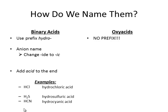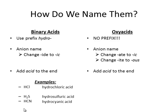Oxy acids do not use the prefix 'hydro.' Even though there's still hydrogen in it, the word 'acid' at the end tells us there's hydrogen in it. The prefix 'hydro' just tells us if it's binary or not. Since oxy acids are not binary, we don't use that prefix. We take the anion name, and instead of changing -ide to -ic, we need a new rule for -ate and -ite: -ate becomes -ic, just like -ide became -ic, and -ite becomes -ous. Then we add 'acid' at the end.